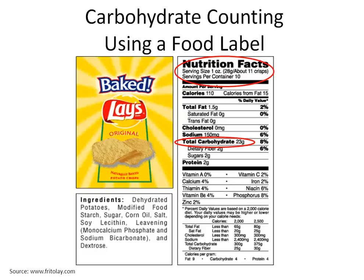Reading food labels can be confusing, but you only need to look at a few key points on the label when carbohydrate counting. The nutrition facts can be found on the side or the back of the food package. First, you need to look at the serving size, which is listed at the top of the food label.